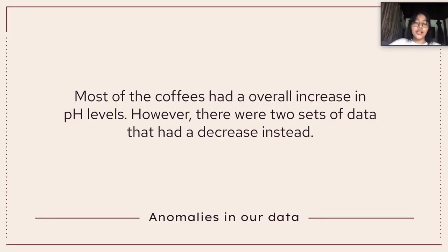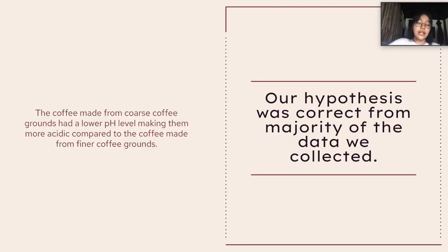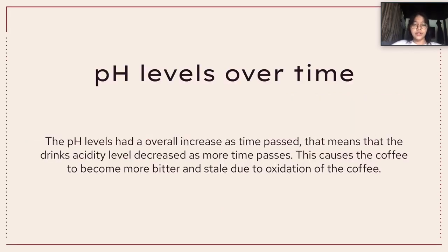Most of the coffee had an overall increase in pH levels; however, two cups of coffee had a decrease instead. A likely reason for this decrease in pH level would be an increase in acidity at some point during the experiment, differing from the other cups which had a decrease in acidity. Our hypothesis was correct based on the majority of the data we collected, as coffee made from coarse grounds had a lower pH level, making them more acidic compared to coffee made from finer grounds. pH levels had an overall increase as time passed, meaning that the acidity level decreases as more time passes, causing the coffee to become more bitter and stale due to oxidation.